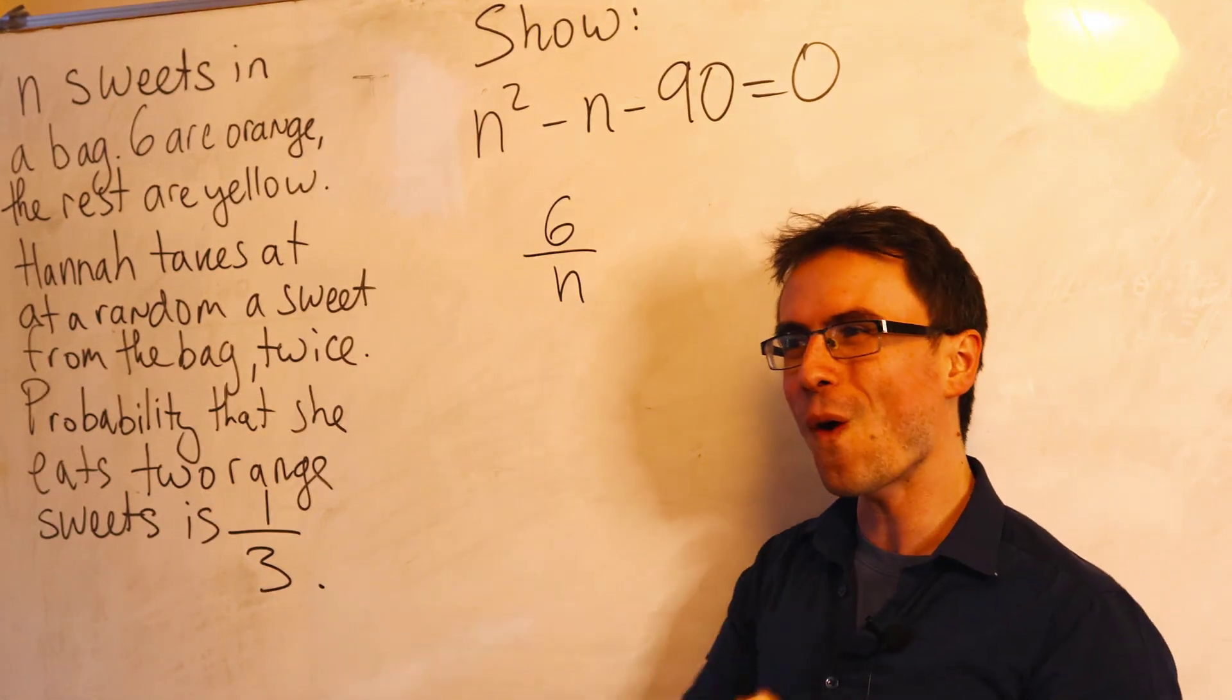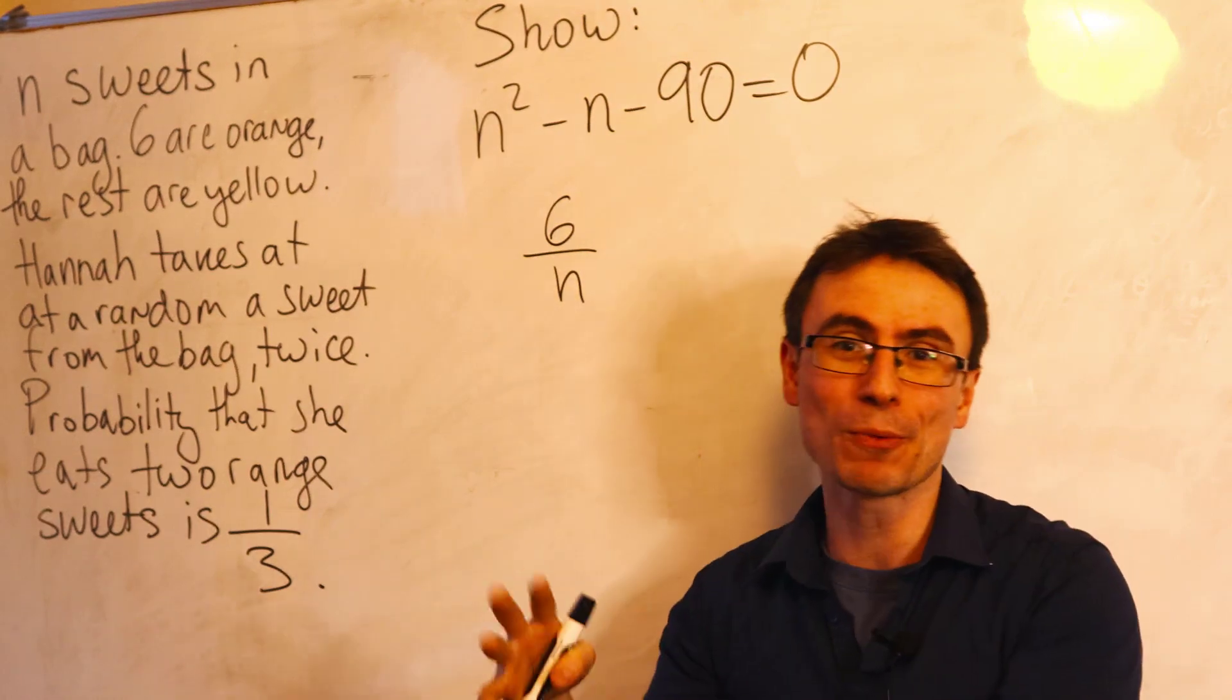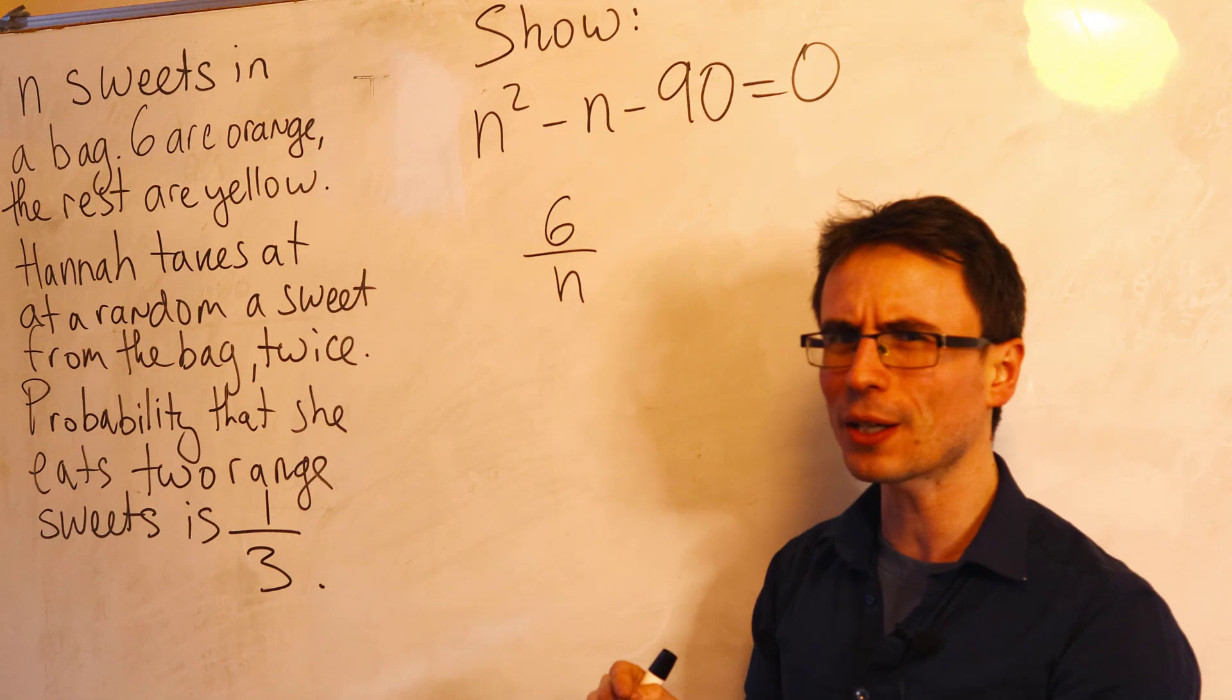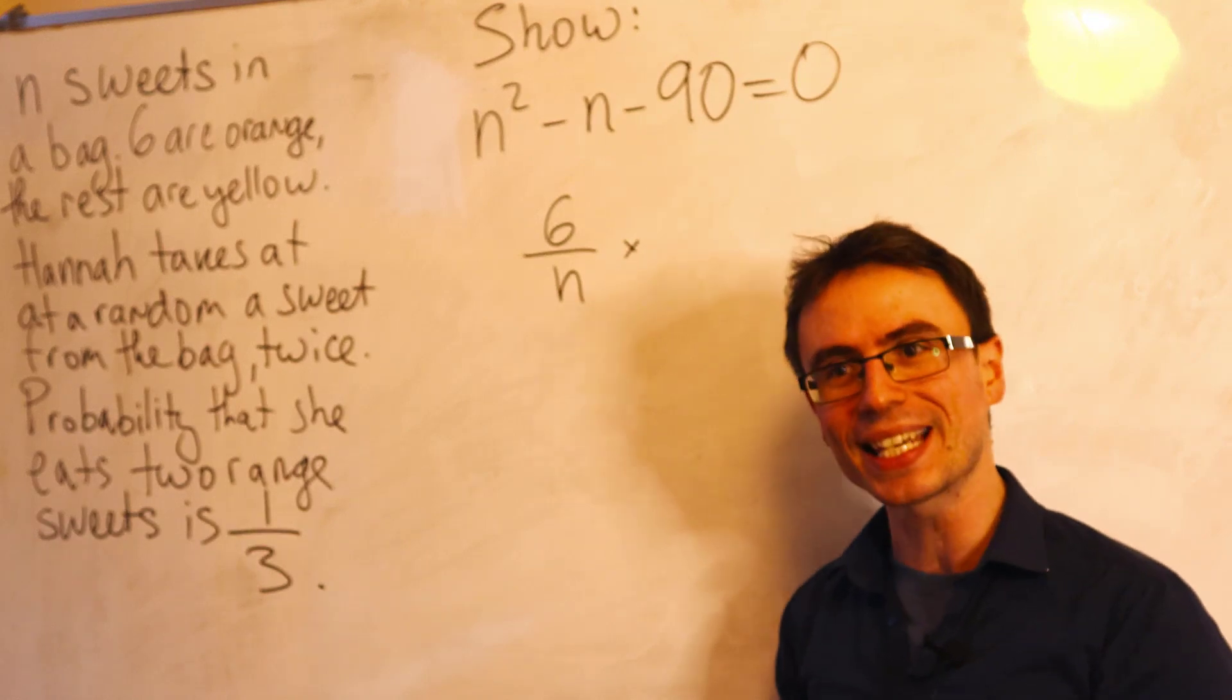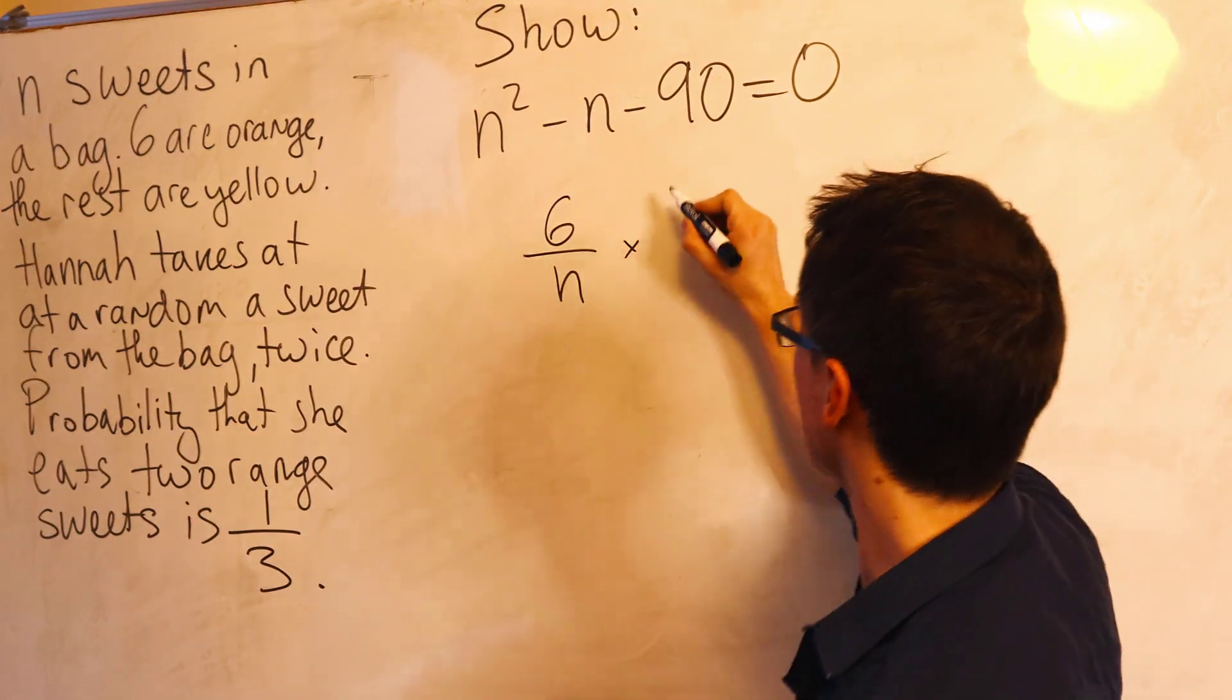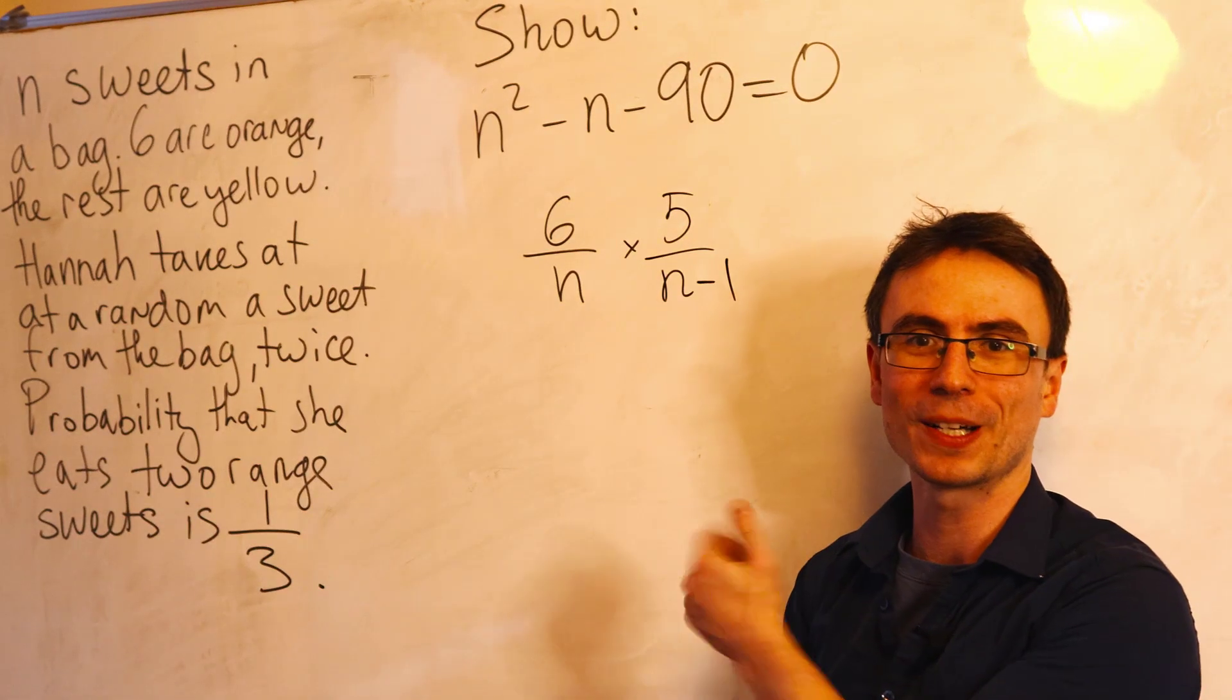If there were N sweets before, after she's taken the orange, there's going to be N take away one sweets left. And how many orange sweets are there going to be? Well, they're going to be five. So the probability of the second event, Hannah taking a second orange sweet in a row, will be given by five divided by N minus one.